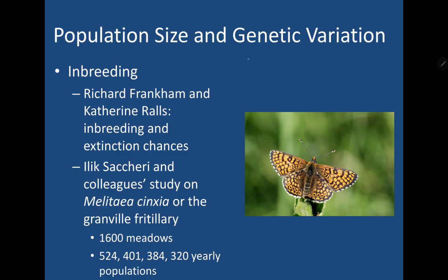Recall from your genetics these two terms: homozygosity and heterozygosity. Homozygosity refers to an organism possessing two identical forms of a gene, whereas heterozygosity refers to an organism possessing different forms of the gene. A high amount of heterozygosity in the population leads to more genetic diversity.